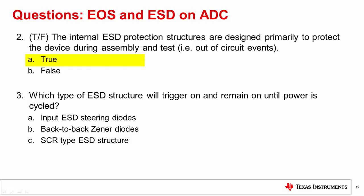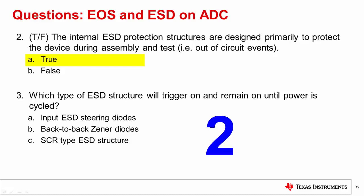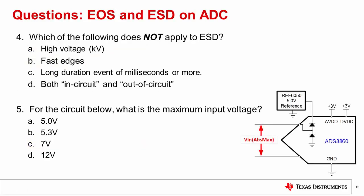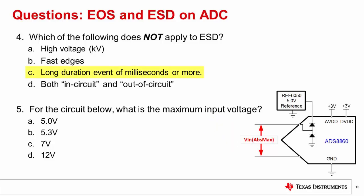Which type of ESD structure will trigger on and remain on until the power is cycled? The correct answer is C, the SCR type ESD structure. As mentioned before, the built-in ESD protection is designed to work without power applied. When power is applied, triggering the device can create a latch-up situation. Which of the following does not apply to ESD? The correct answer is C, long duration event of milliseconds or more. In general, ESD events are very short, nanosecond-type events with high voltages and fast edges.